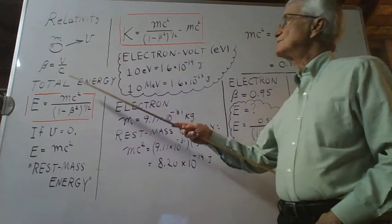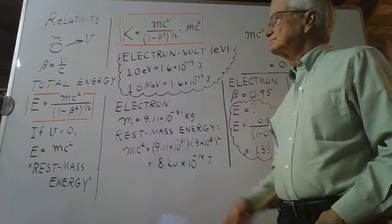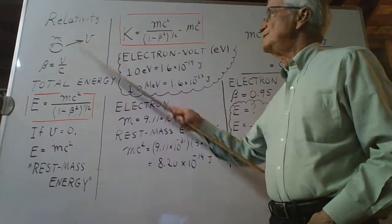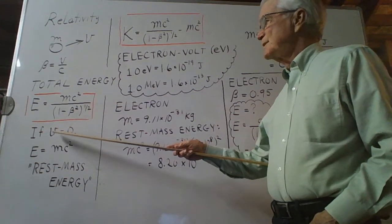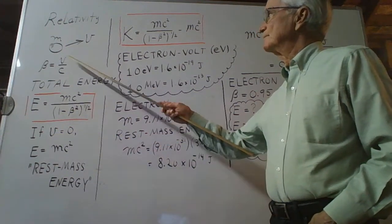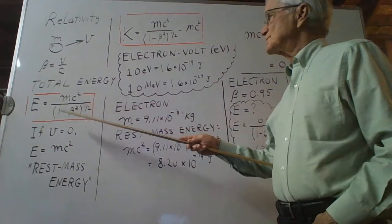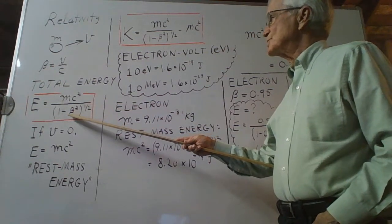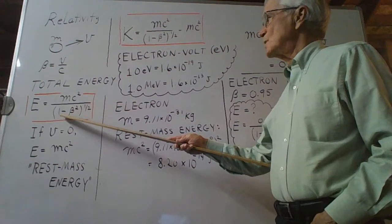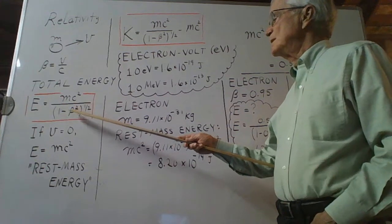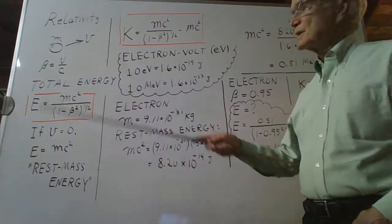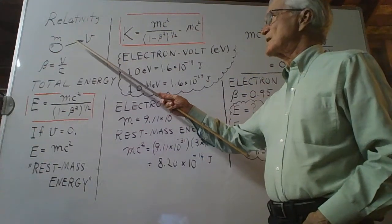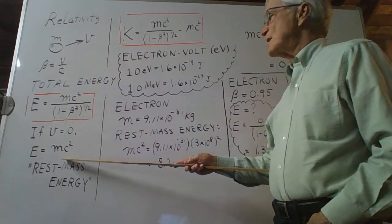The total energy of that object moving with speed v is that ratio. Notice that when v is equal to zero, beta is equal to zero, beta squared is zero, the parentheses is one, square root of one is one, and the total energy of that object which is at rest is mc squared.